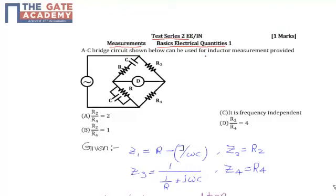for inductance measurement, provided. In the given question they have given an AC bridge where the supply voltage is AC. This is the bridge circuit having the impedances. Here a resistor is series connected with a capacitor, and here the resistor is connected parallel with the capacitor. These are the Z1, Z2, Z3, and Z4 impedances of the bridge circuit.